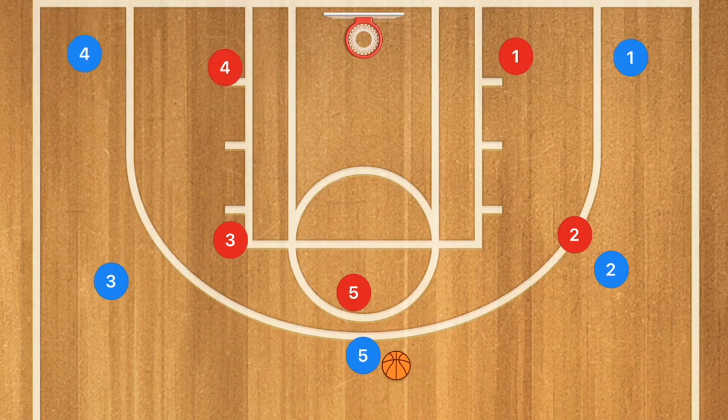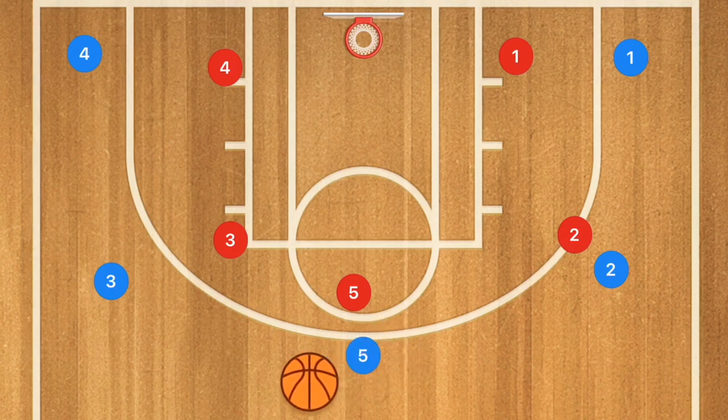Another great play that you can run with an AAU basketball team is out of the 5-out. This one I like to call STS because that's exactly what you're going to be doing — you're going to be running a screen-to-screener basketball play. So player 5 is going to pass over to player 3.